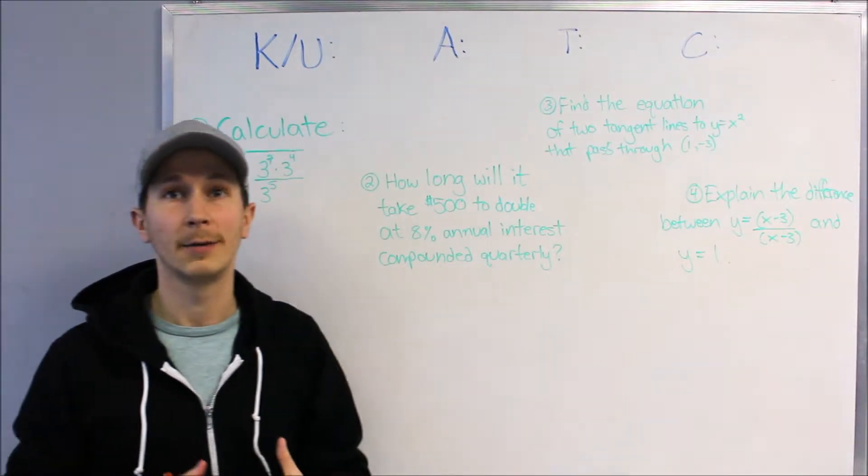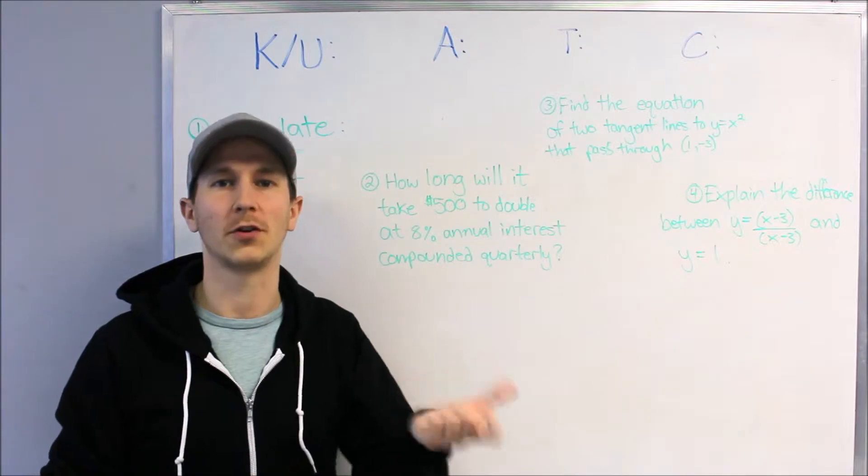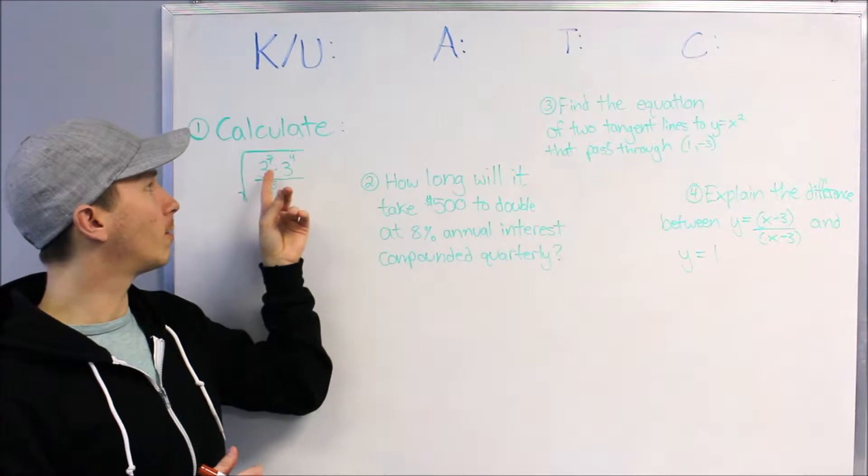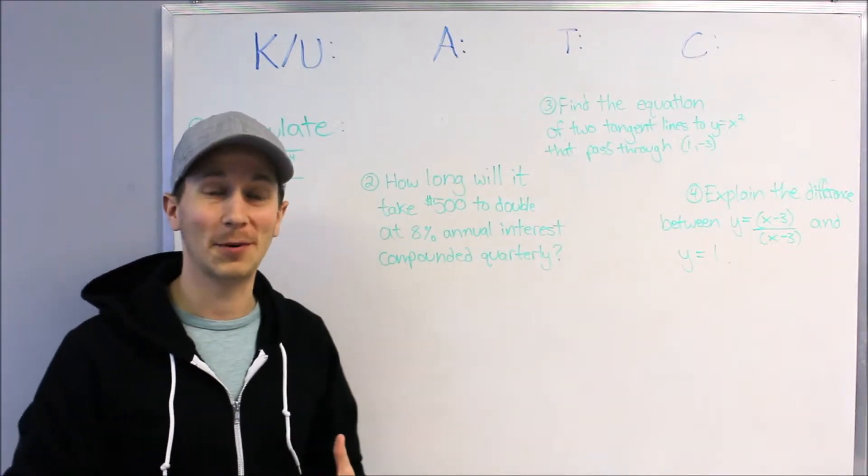The first one, Knowledge Utilization, is really just did you study, did you figure out what formulas are going to be used, and do you know the core concepts of this unit. So for instance, if it was exponentials, you might have the square root of 3 to the 7 times 3 to the 4 over 3 to the 5. That might look complex right now.